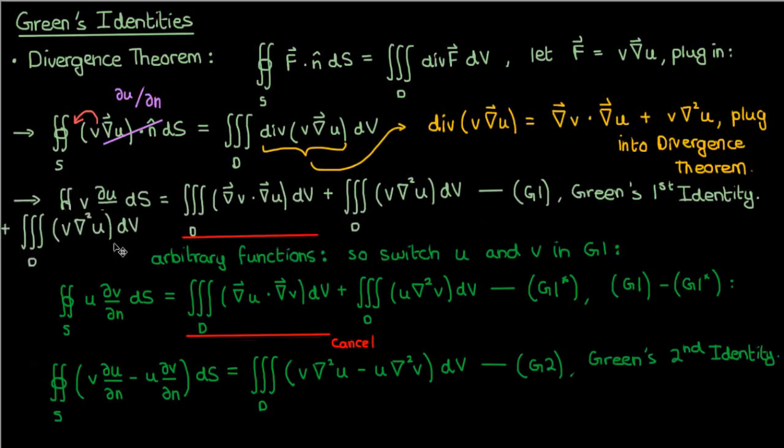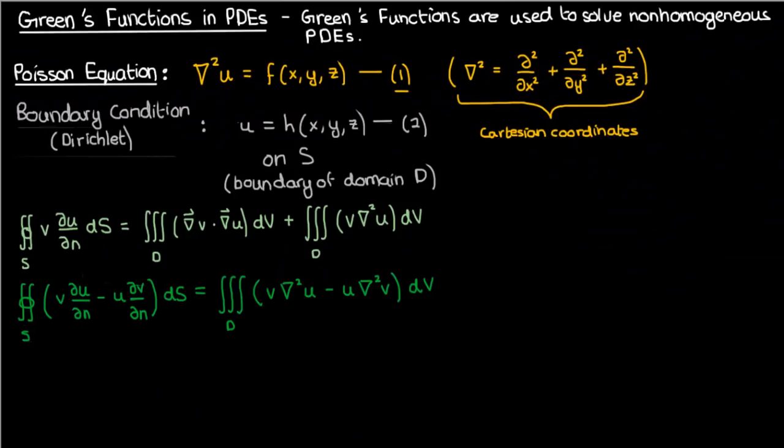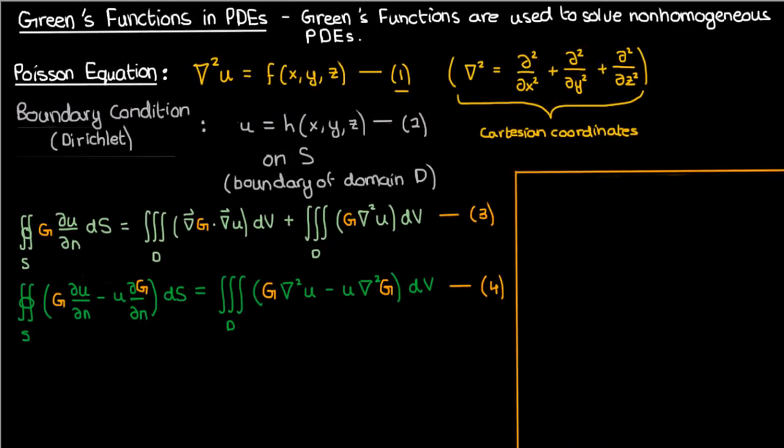Now that we have the two Green's identities, I'm going to copy-paste them back underneath our original Poisson equation with one modification. I'll replace the v by capital G. The capital G is going to turn out to be a Green's function, which I'm going to define right here.